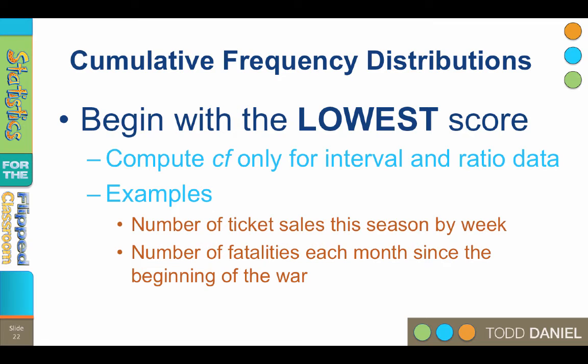Or perhaps we're plotting the number of fatalities that have occurred since the beginning of the war. Each month, we tabulate new totals and plot them with an ever-increasing line. When the line is flat, good news, no new fatalities are being added. When the line ascends rapidly, many more people are getting killed.